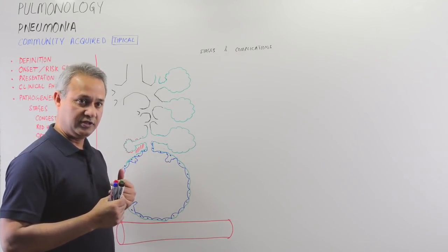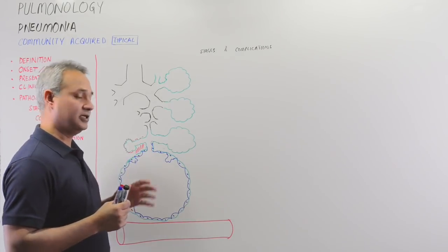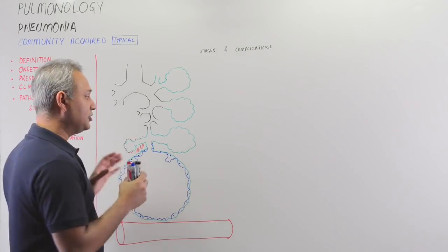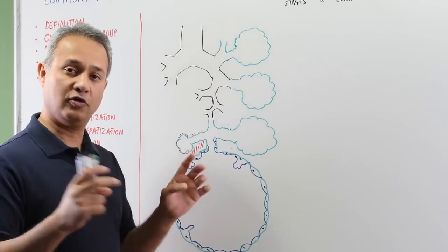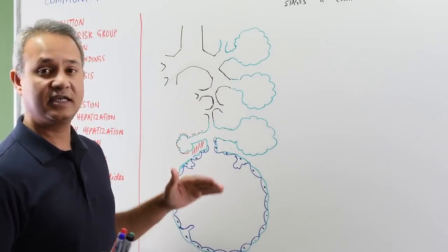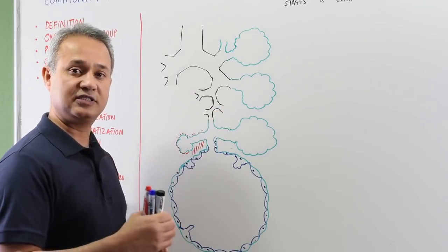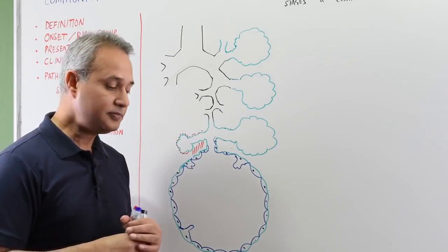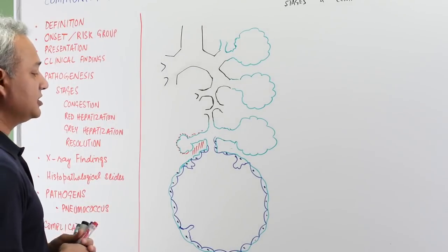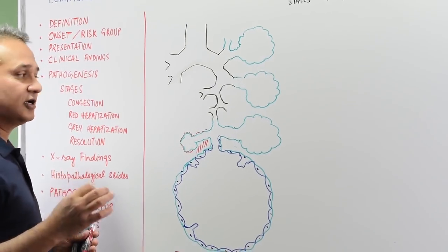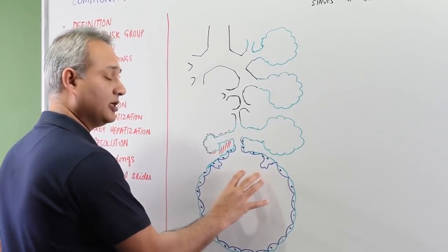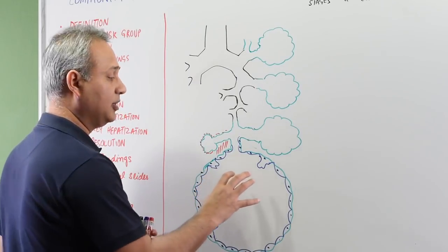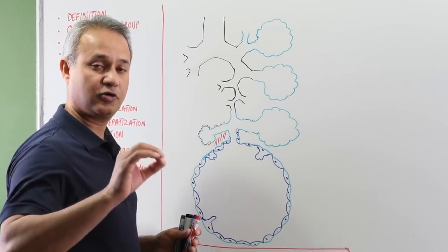There are many pathogens that can cause typical pneumonia. The most common is Streptococcus pneumoniae, or pneumococcus. We'll use pneumococcus as our primary example and examine its effect on the system, then look at other pathogens and the categories of people they affect. Typical pneumonia is defined as an infection of the lung that involves the alveoli in the inflammatory process and causes the alveoli to become filled with consolidation.